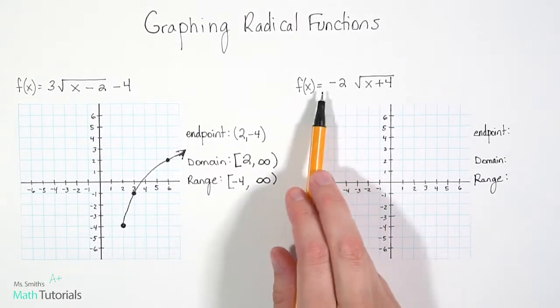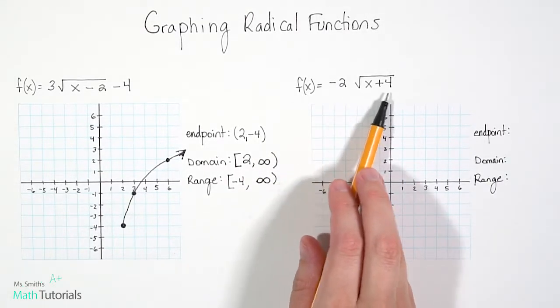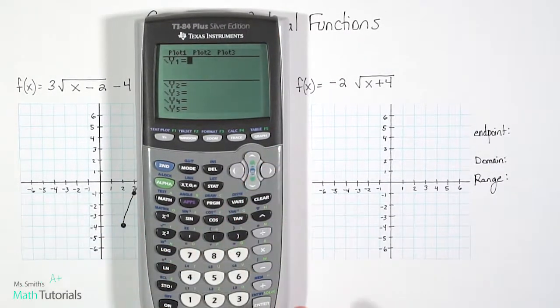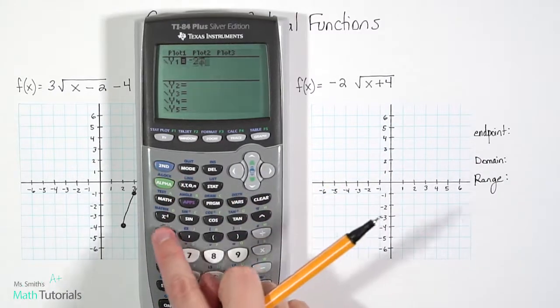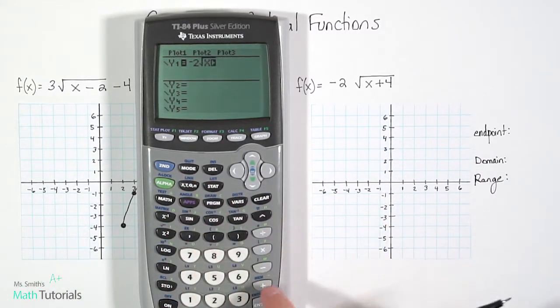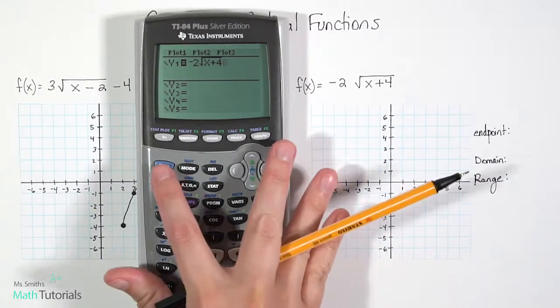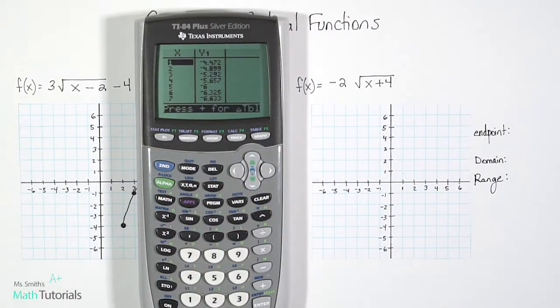For my next point, I've got a negative 2 times the square root of x plus 4. Let's bring our graphing calculator back out, and let's type that in. So negative 2 times square root of x plus 4. The x plus 4 is underneath the radical.